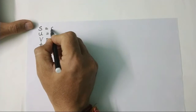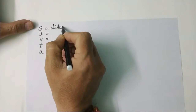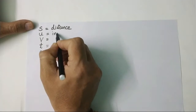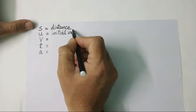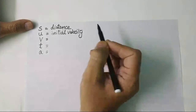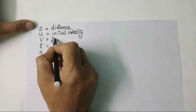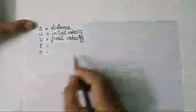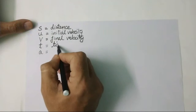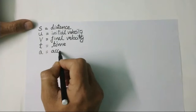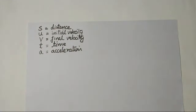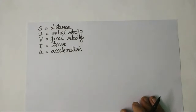The symbol s means distance. The symbol u means initial velocity. v is final velocity. t is the time, and a is the acceleration. Remember the symbols first, then the equations will come easy. These are the symbols used in the linear equations of motion.